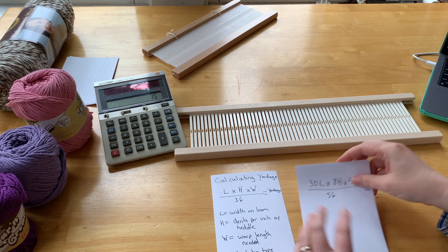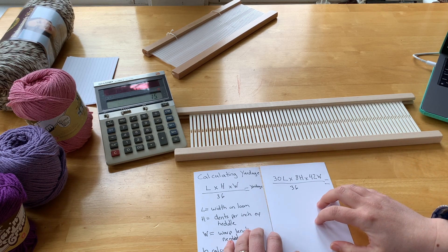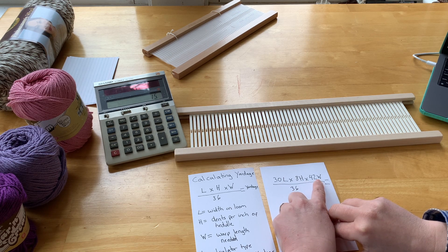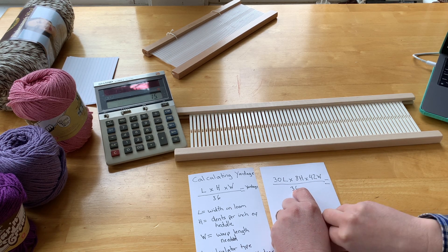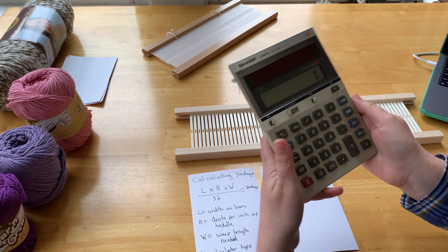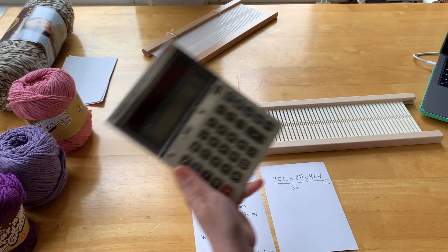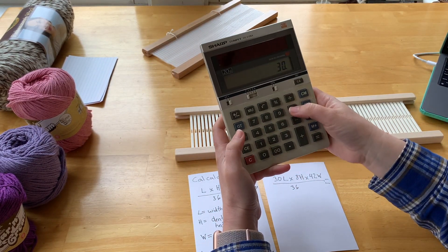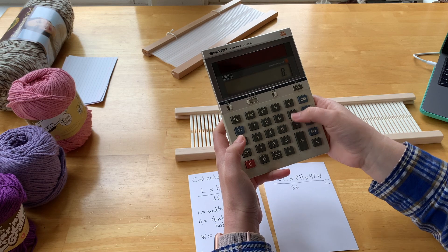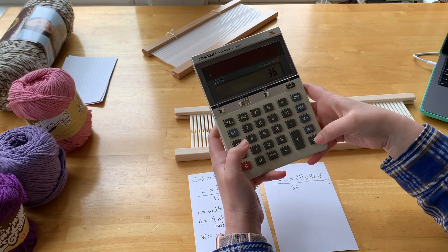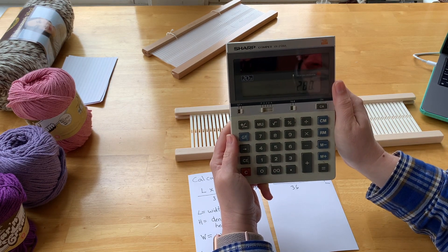So let's flip this over here and take a look at what we're dealing with with my particular project. So 30 times 8 times 42, divided by 36—36 is the number of inches in a yard—so let's calculate that out to figure out how much yarn I need for my warp threads. So we're going to take 30 times 8 times 42 divided by 36, and that gives us 280 yards.